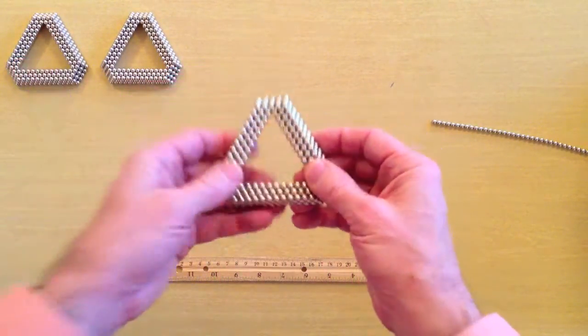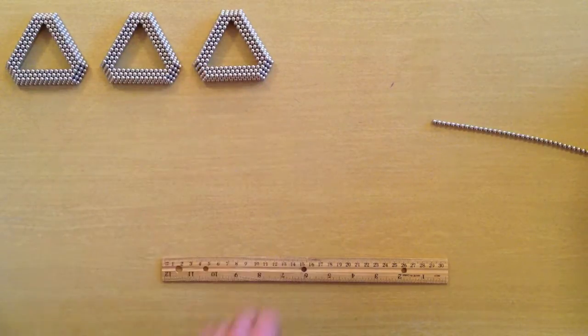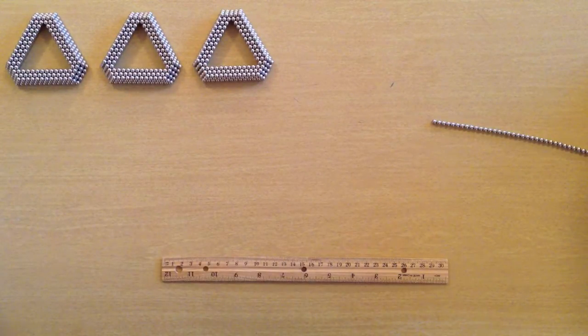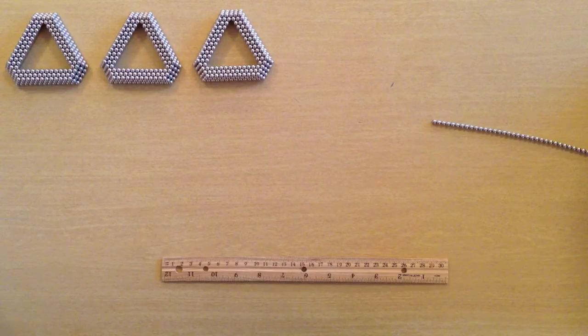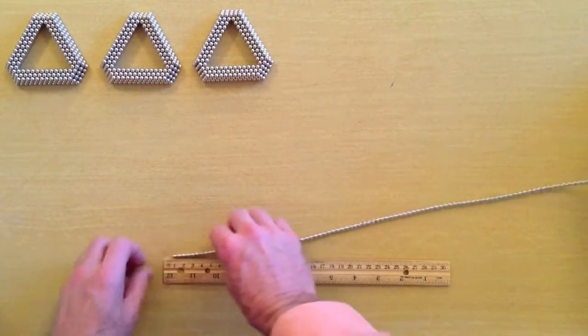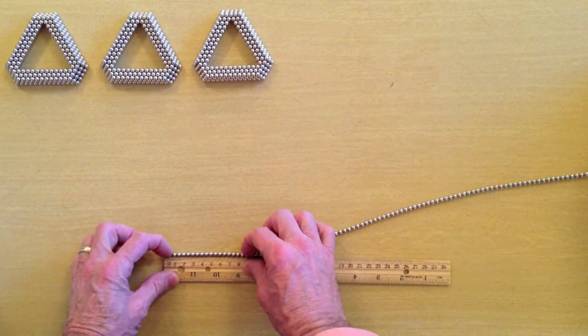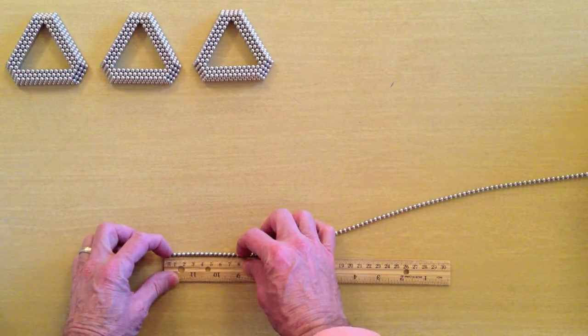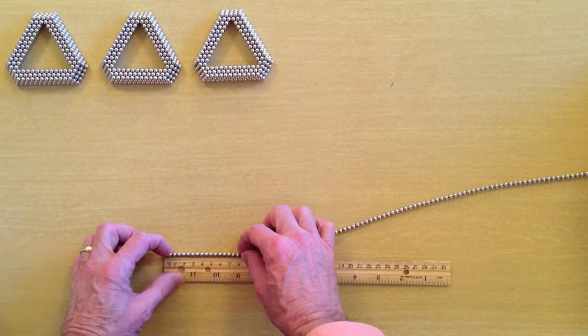The first layer is based on a single strand triangle with edge length that is four magnets fewer than the octahedron edge length. For an octahedron edge length of 20 we need a single strand triangle with an edge length of 16 for the first layer. Measuring off 8 centimeters on the centimeter ruler to give me 16 magnets along the edge of this triangle.